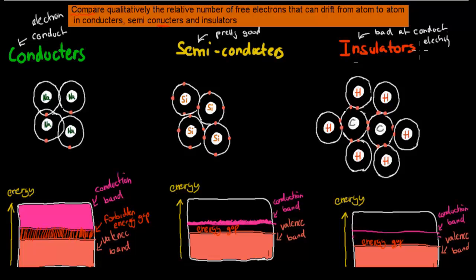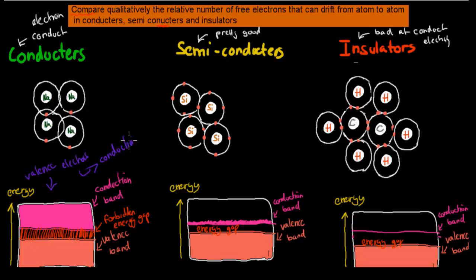The band structure for a conductor looks something like this. What that means is that all of your valence electrons, which used to be in the valence shell, are basically now in the conduction shell. We can say that the valence electrons and the conduction electrons are one and the same, because all valence electrons are actually conduction electrons — they're all moving freely in a conductor.